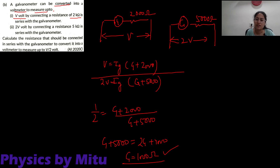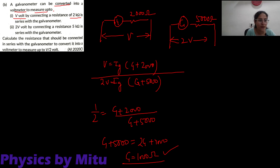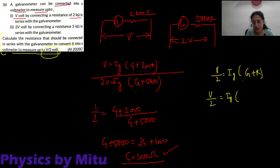So the resistance of the galvanometer is 1000 ohm. Now the question is: calculate the resistance that should be connected in series with the galvanometer to convert it into a voltmeter to measure up to V/2 volt. We need to find R, using the formula: V/2 is equal to IG into (G + R), where G is 1000 ohm.